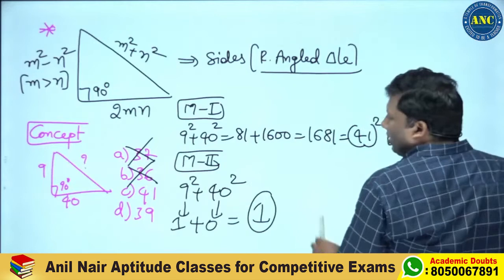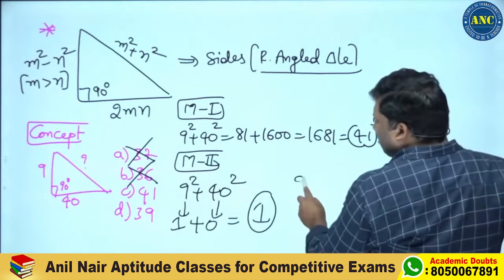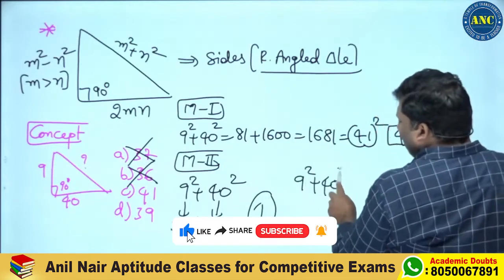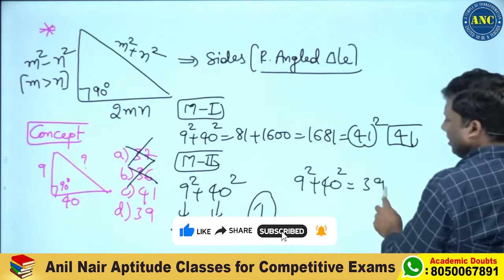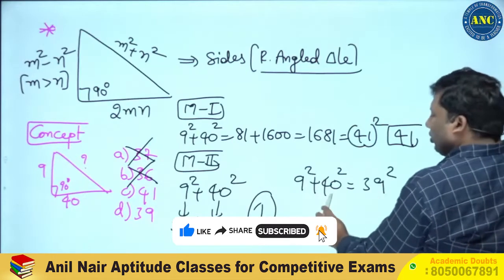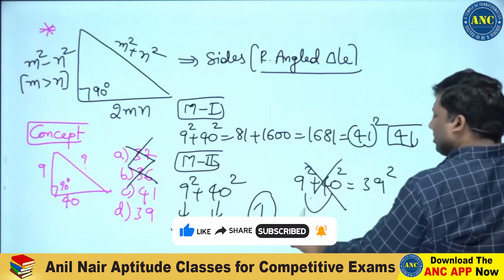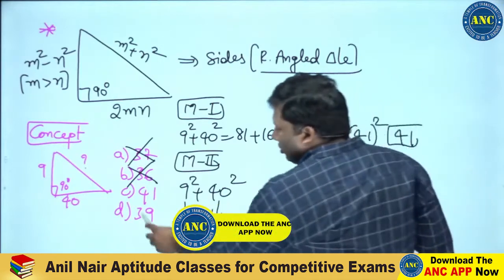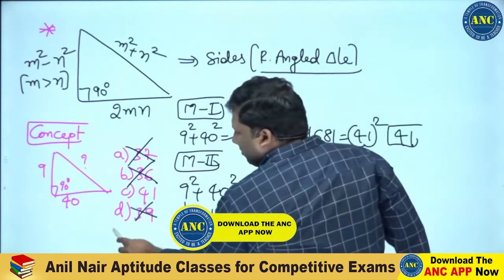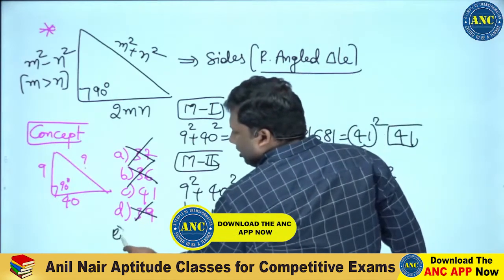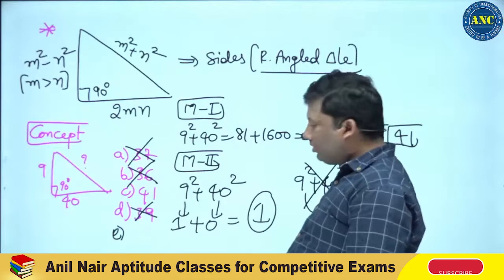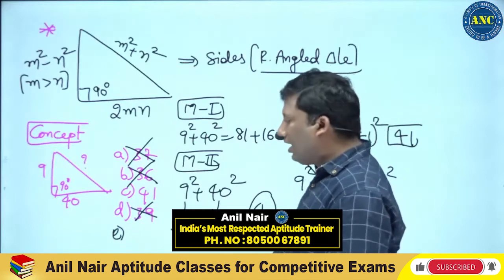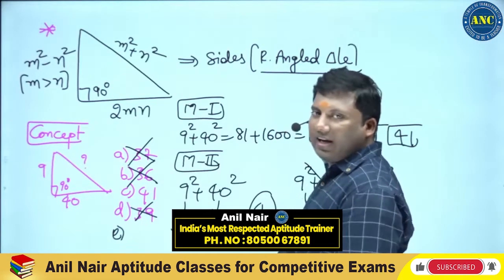If you take option 39: 9² + 40² cannot equal 39², because you are adding something to 40² — how can the result be less than 40² itself? That is not possible.